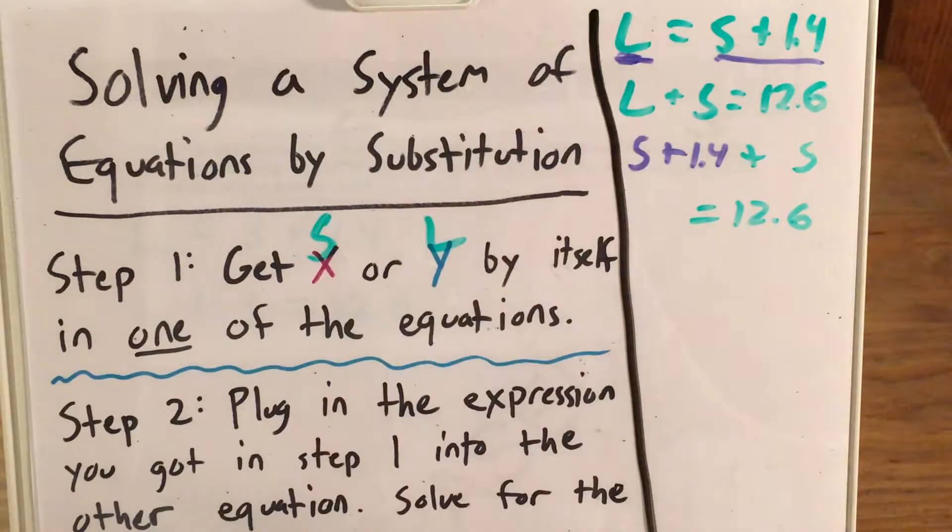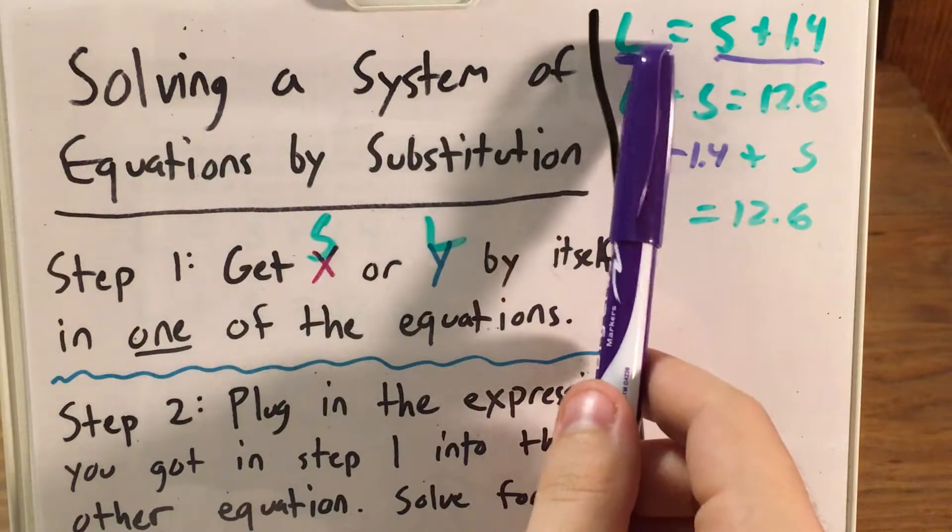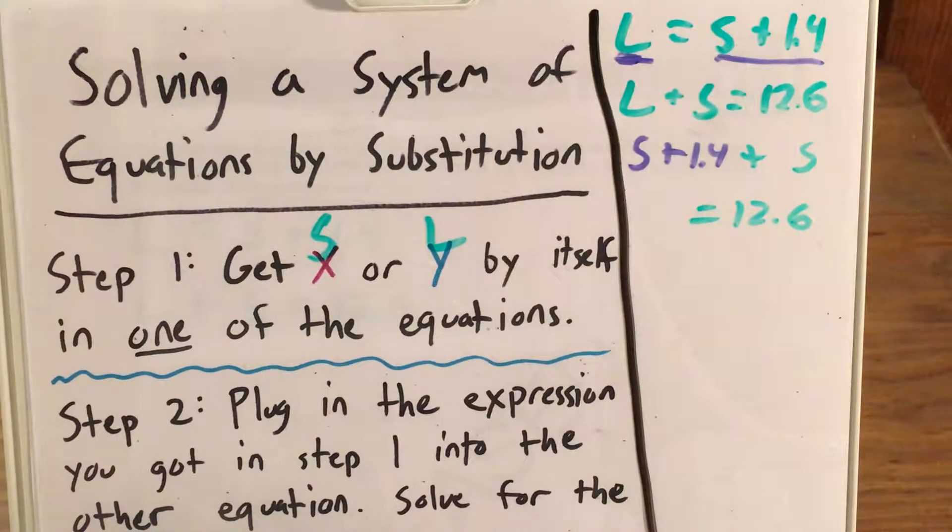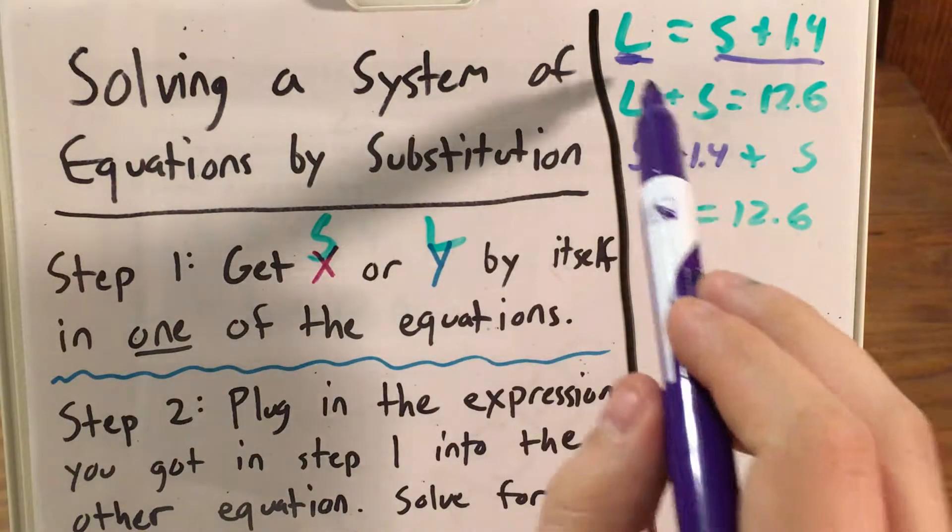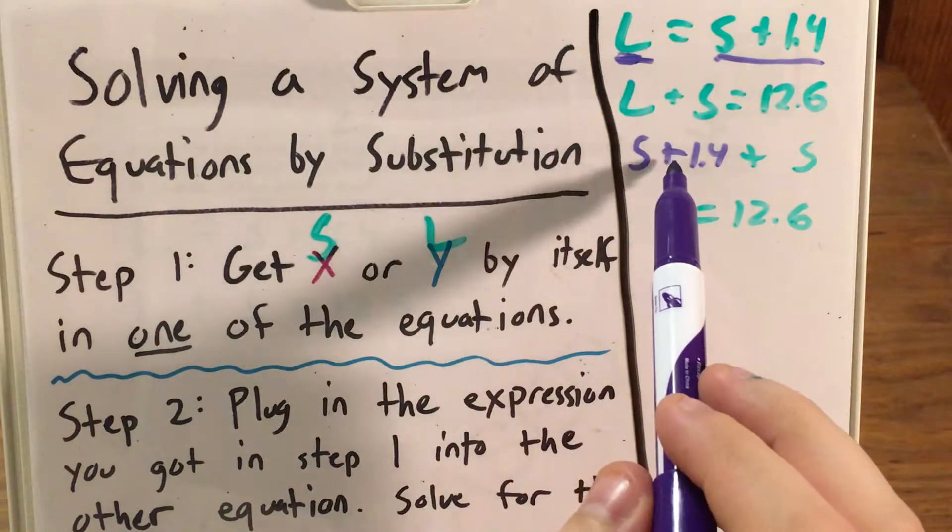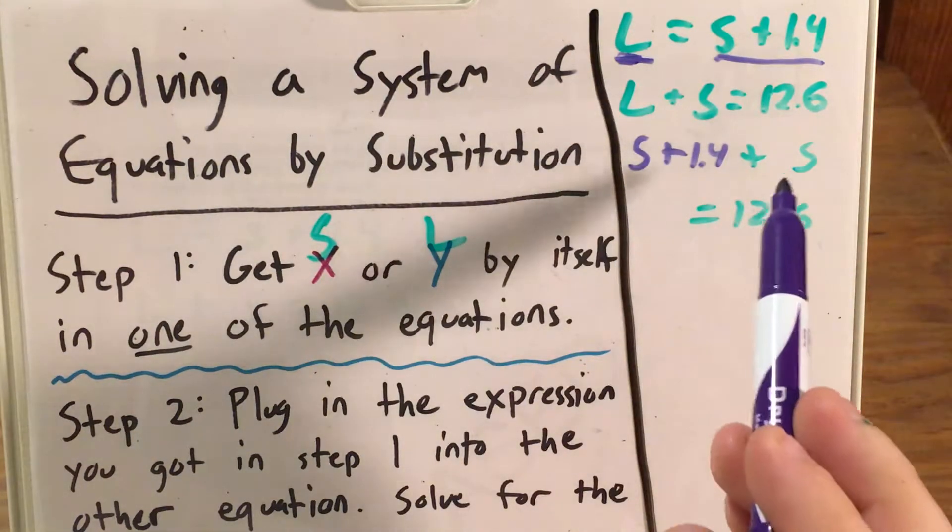So instead of large dog, I'm just saying small dog plus 1.4. We can treat this like it's somebody's first name and middle name. You might know someone who goes by their middle name, and occasionally you might see their parents or family member call them by their first name or vice versa. Two names for the same person, just like in substitution, we're subbing out one name for something for the other name. Instead of L, S plus 1.4.